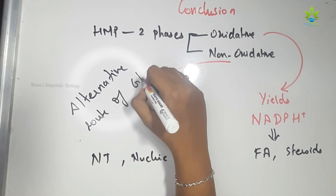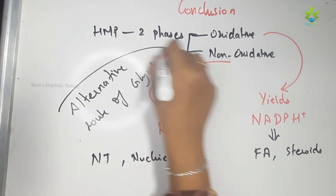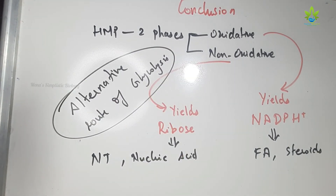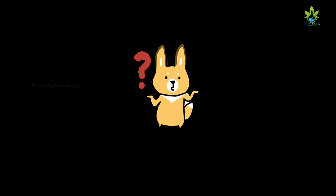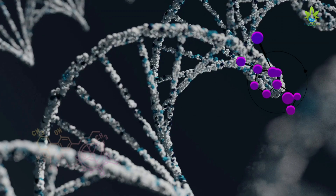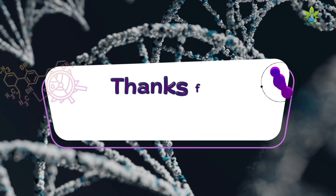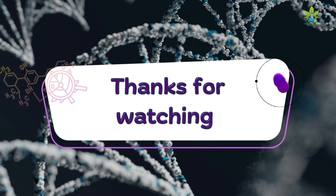So the HMP shunt or Pentose Phosphate Pathway is an alternative route which feeds back into the glycolysis cycle. If you have any doubts about this video, let us know in the comment section. Thank you so much for watching, and we'll see you in another video.